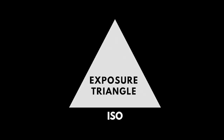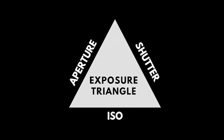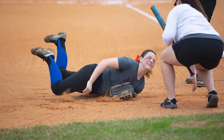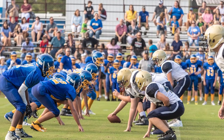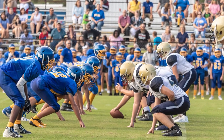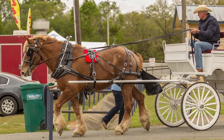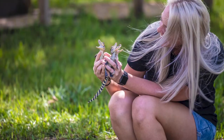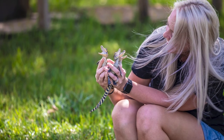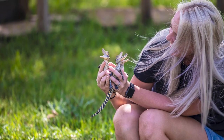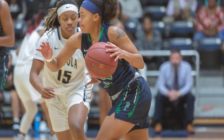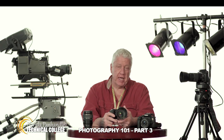ISO, aperture, and shutter speed work hand-in-hand in harmony to provide a well-exposed photograph. When you're prepared to take a photo, you simply take into account the amount of ambient light available, whether you want a deep depth of field with everything in focus or a shallow depth of field with that pleasing creamy bokeh in the background, and whether there's any action to freeze or simply motion to blur.